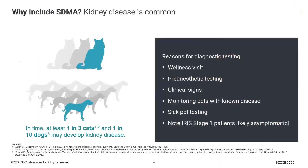The question of why we should include SDMA in a profile — the answer is that kidney disease is common. If we look over the lifetime of a cat, there's probably a one in three chance that by the time they're a senior or geriatric cat, that one in three cats will have kidney disease. And up to one in ten dogs may develop kidney disease in their lifetime. So it is something we're going to be seeing in both cats and dogs in our clinics.